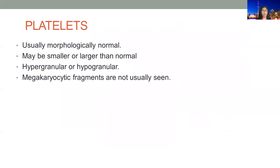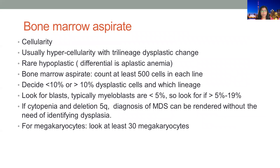For platelets, they are usually normal in the peripheral blood film, but sometimes can be hypogranular and very rarely hypergranular. Megakaryocytic fragments are not normally seen in the blood.